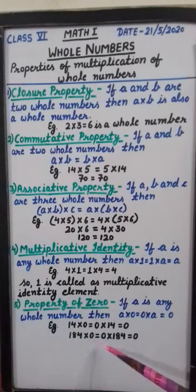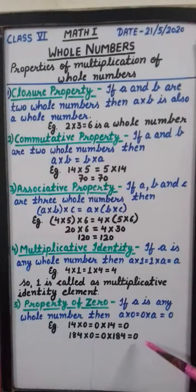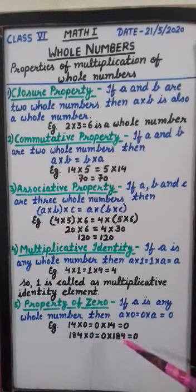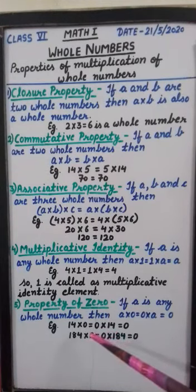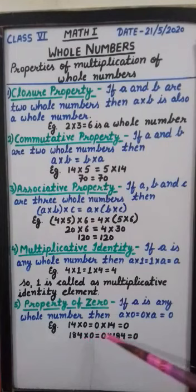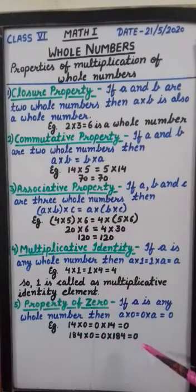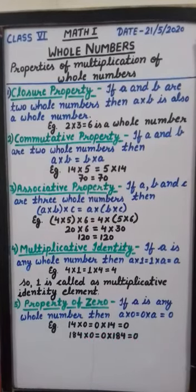One more example: one hundred eighty-four multiply by zero — the result will be zero. So on multiplying any whole number with zero, the answer is zero only. Thank you.